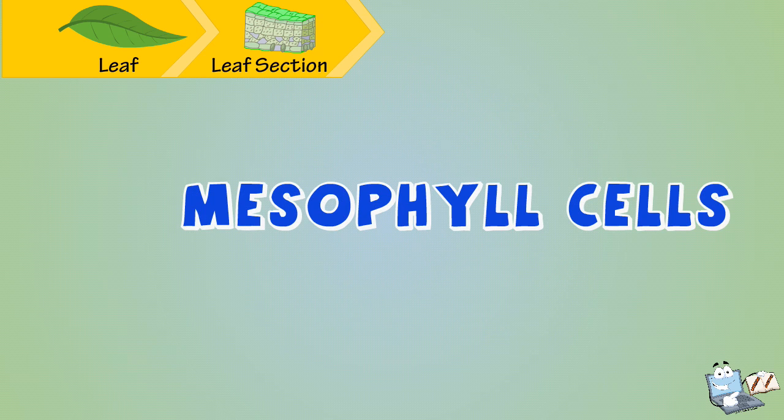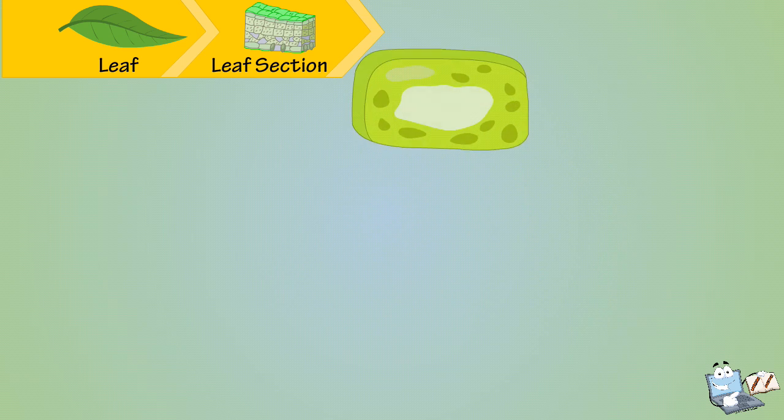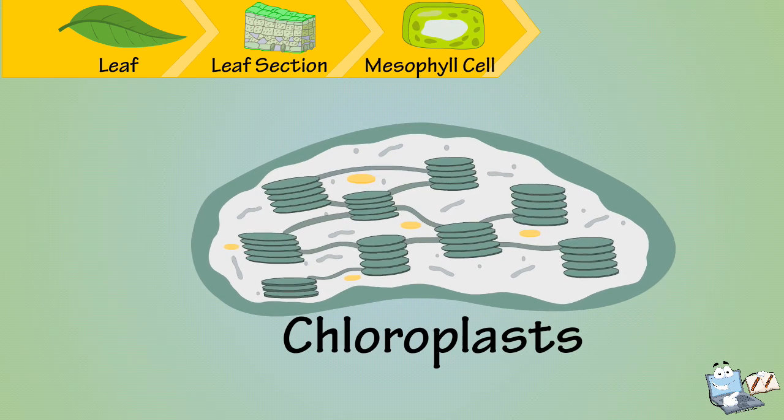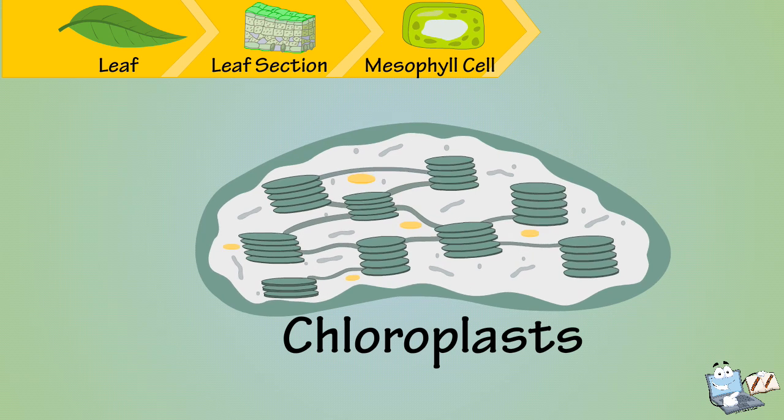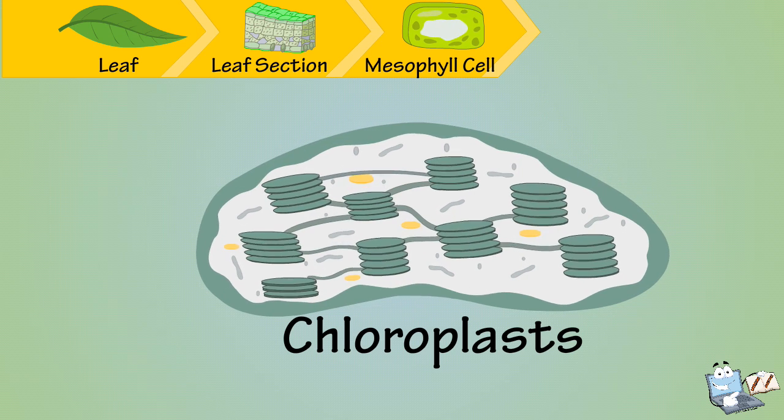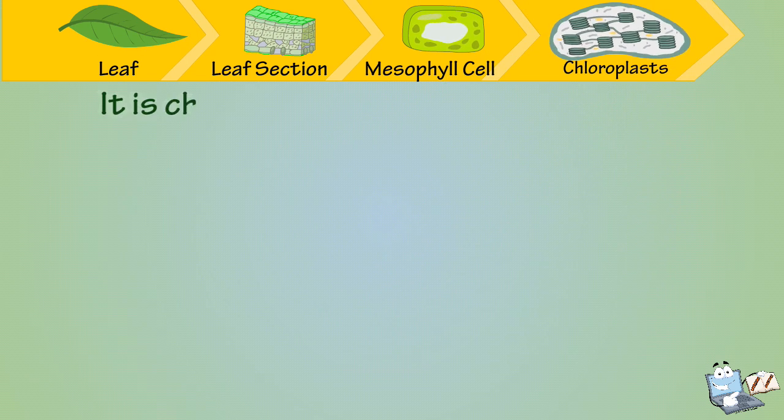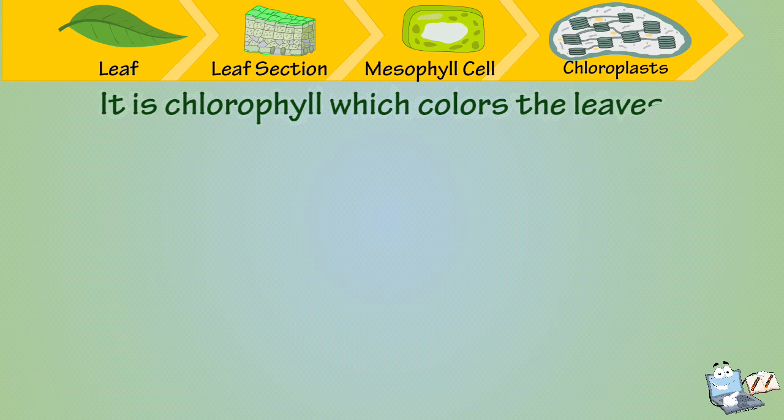Inside the mesophyll cells, we see tiny dots which are called chloroplasts. Chloroplasts contain a special chemical called chlorophyll. It is chlorophyll which colors the leaves green.